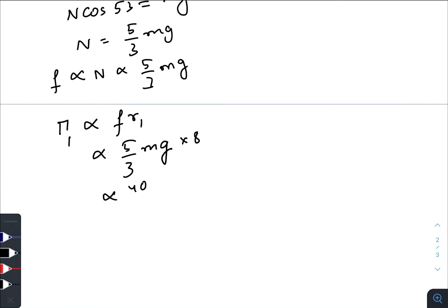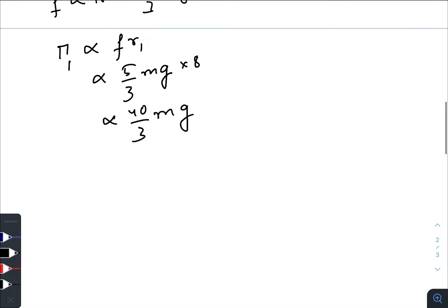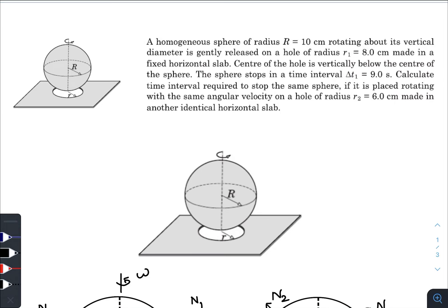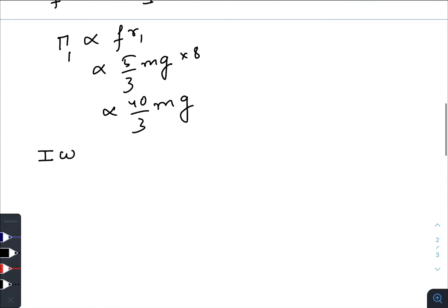So it becomes 40/3 mg. The initial angular momentum will be totally stopped due to this torque in time of nine seconds. So we know that change in momentum equals to the angular impulse. So this whole thing will be directly proportional to this, so I omega is directly proportional to 120 mg.